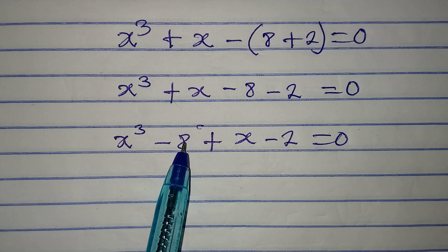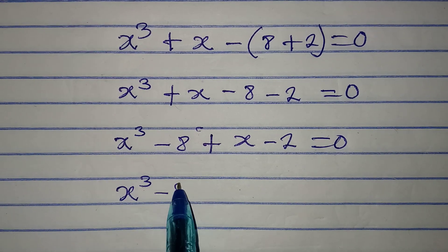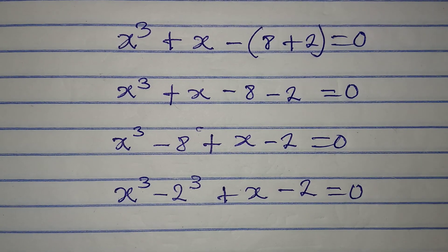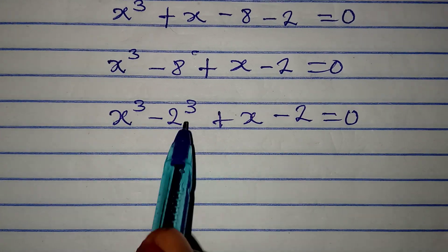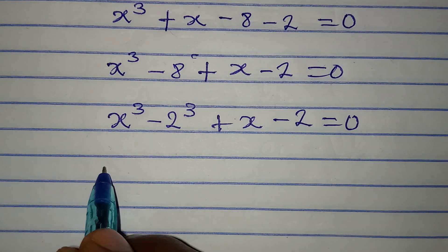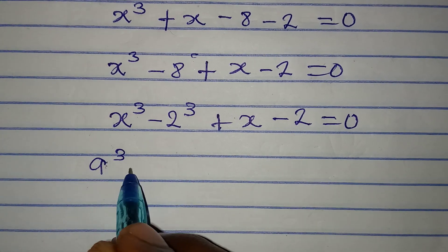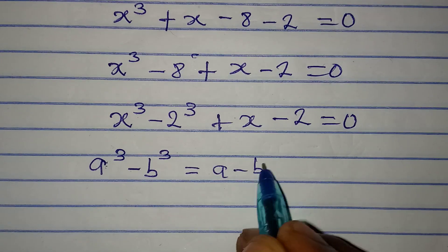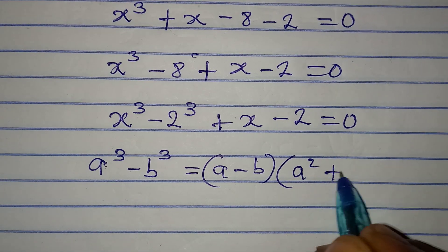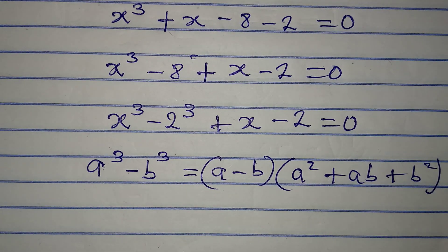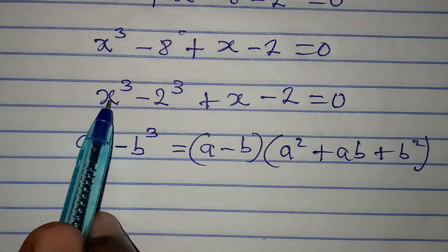The reason I grouped x³ and 8 together is to express 8 in index form, so we have x³ - 2³. When you have two terms like this to the power of 3, remember: a³ - b³ = (a - b)(a² + ab + b²). I'm going to apply this same principle.